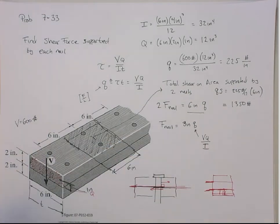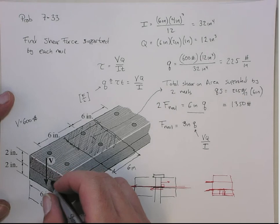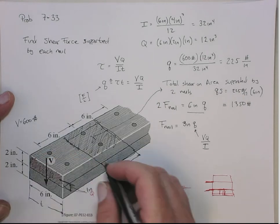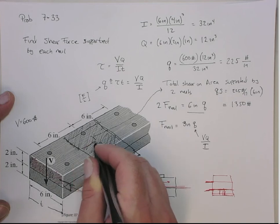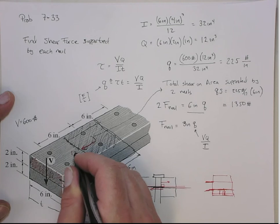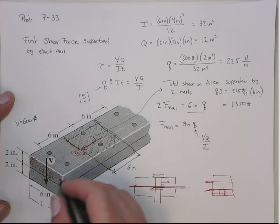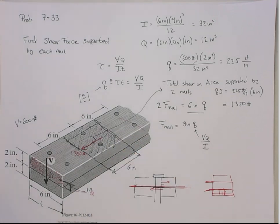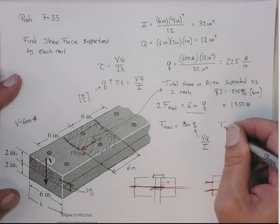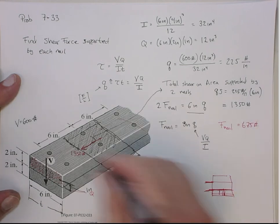So on this plane, the bending force acts such that on the bottom of this surface you would have a force of 1,350 pounds acting on this area — that's the force picked up by those two nails. Each nail picks up half of that, so the force in each nail is going to be 675 pounds. Because there are two nails at each point, the force in each nail is 675 pounds.